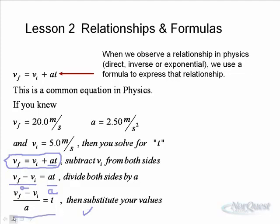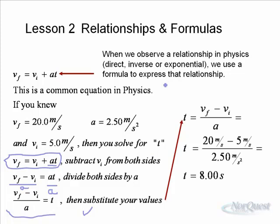Once we have the result, we take our values and plug them in — substitution. Since t = (Vf − Vi) / A, t = (20 − 5) / 2.5, final minus initial divided by the acceleration, and we find that the time of acceleration is 8.00 seconds. You can see that you're given some information, you have a basic formula, you manipulate that formula to solve for your unknown. That's common practice in Physics 20 and 30, and all through later stages of physics as well.